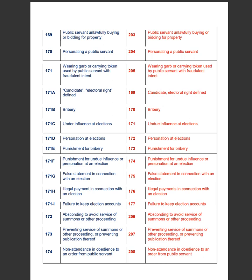Section 169 of the IPC deals with public servant unlawfully buying or bidding for property, whereas Section 203 of the BNS deals with public servant unlawfully buying or bidding for property. Section 170 of the IPC deals with personating a public servant, whereas Section 204 of the BNS deals with personating a public servant. Section 171 of the IPC deals with wearing garb or carrying token used by public servant with fraudulent intent, whereas Section 205 of the BNS deals with the same.